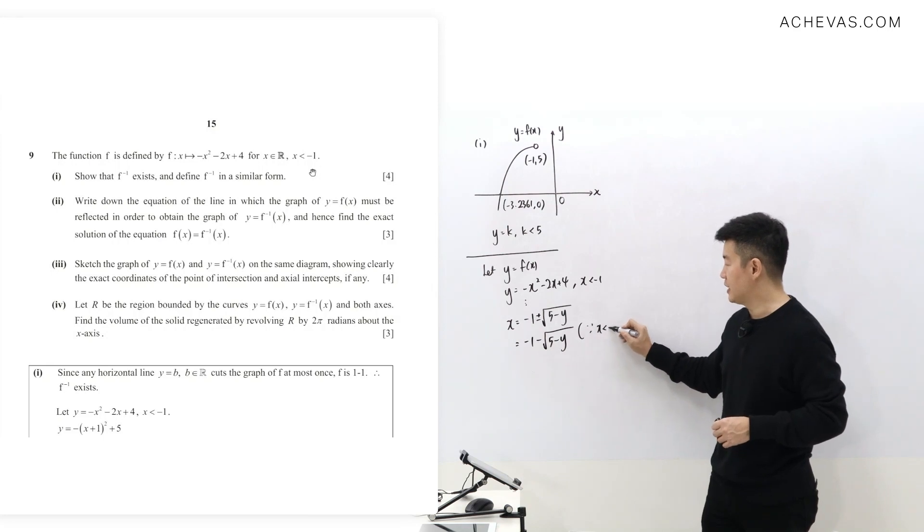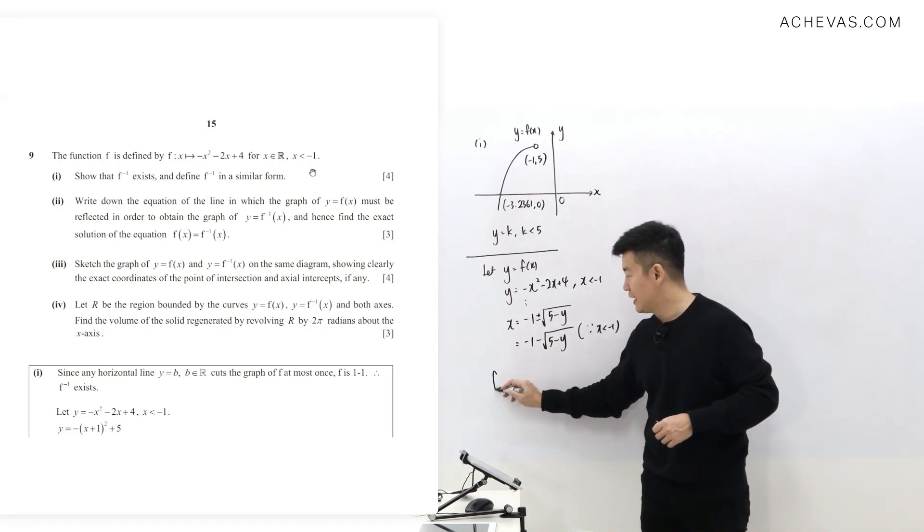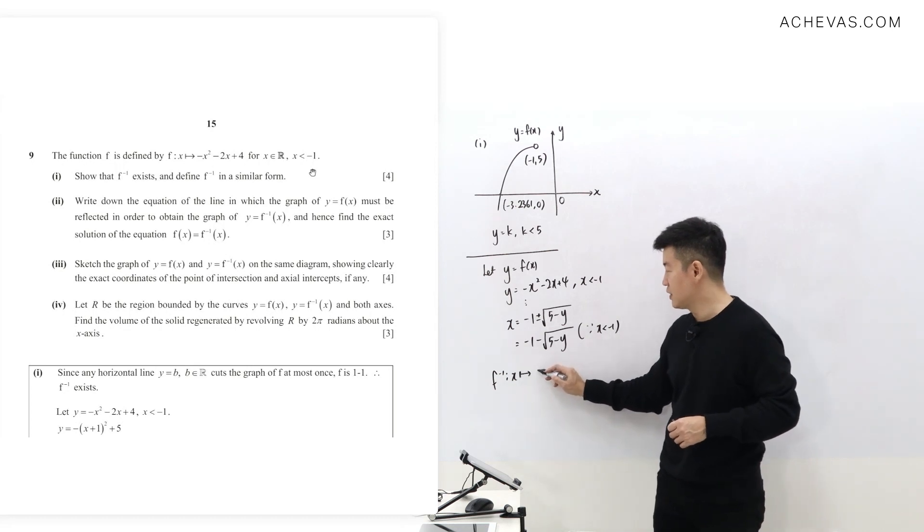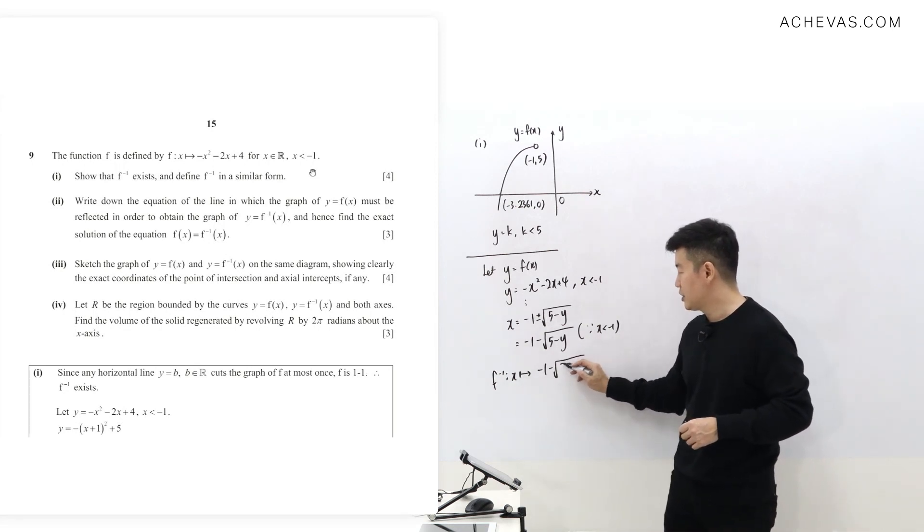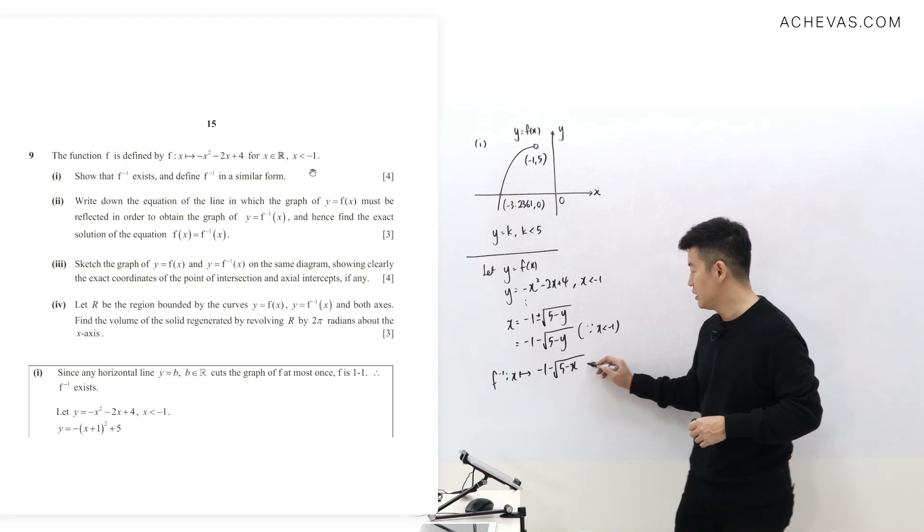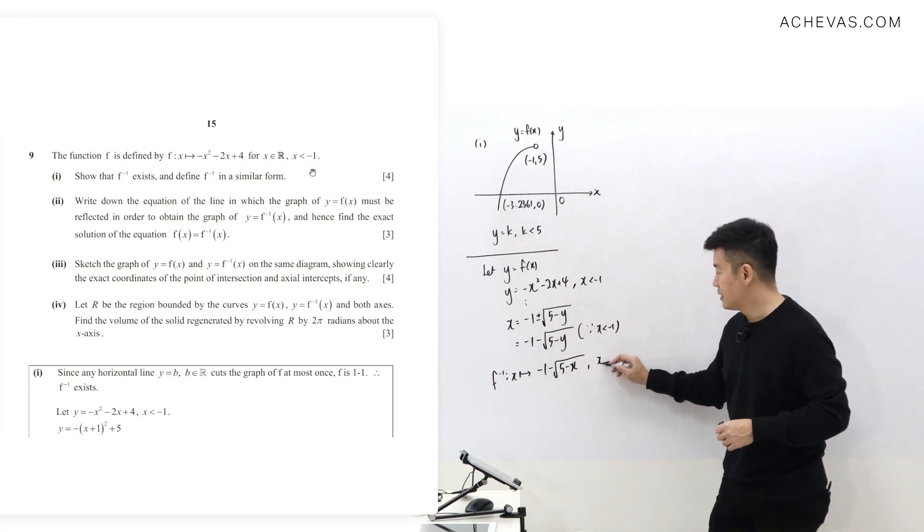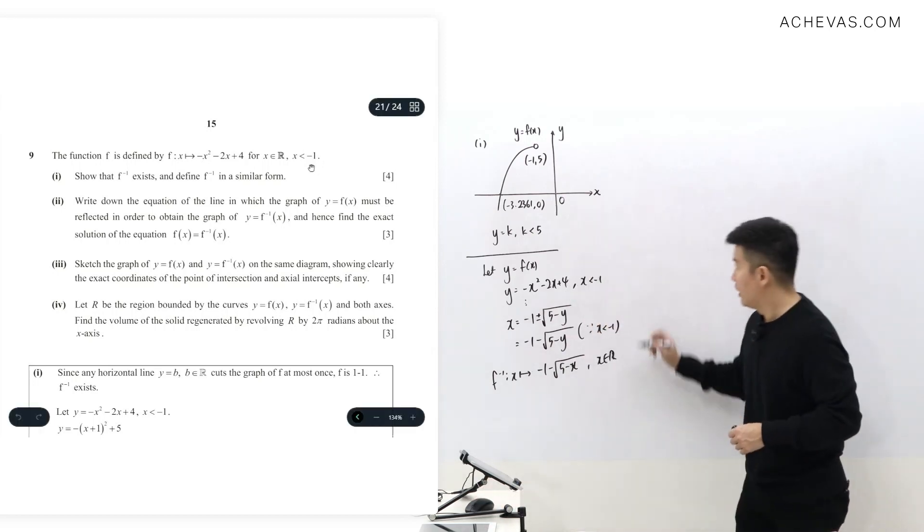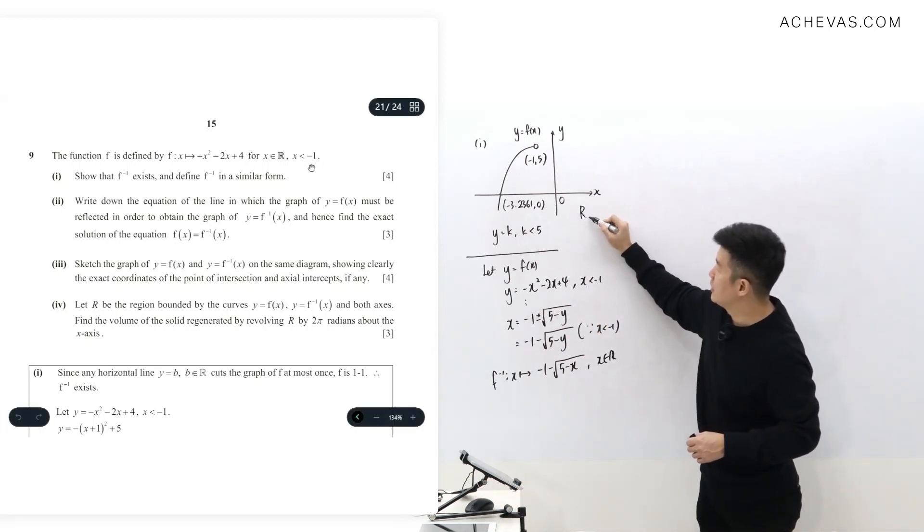This is because x is less than minus 1. So I know that f inverse is going to be mapping x such that it takes up the expression or the rule as this, where x belongs to all real numbers. I'm simply following this.